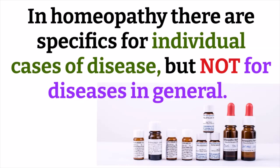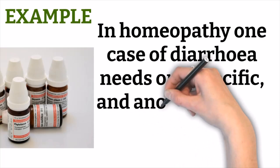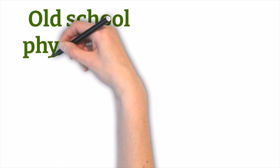Note that in homeopathy there are specifics for individual cases of disease but not for diseases in general. The old school, however, has specific remedies for different diseases in general. For example, one case of diarrhea may need one specific and another case of diarrhea may need another, but the old school has one specific drug for diarrhea in general — they do not individualize one case from another.